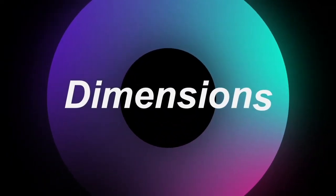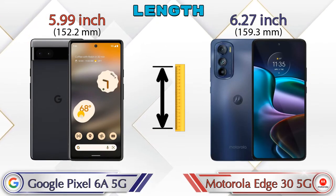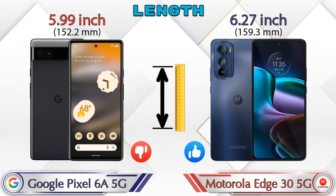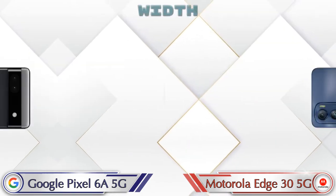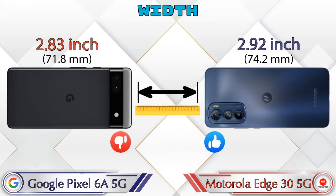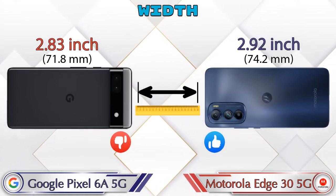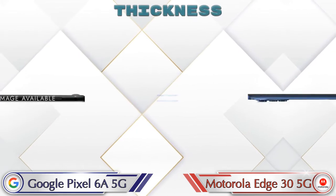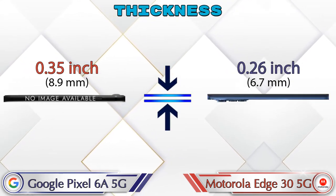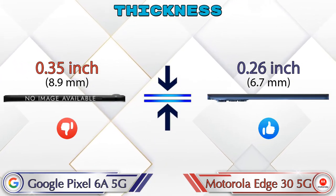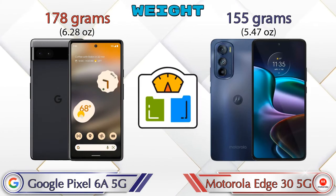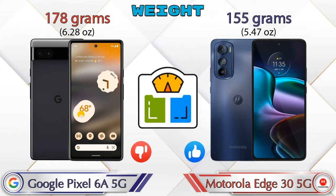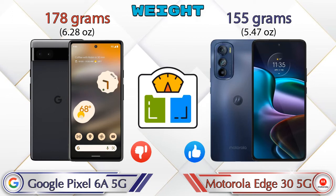Now let's check the dimensions. Length: the Pixel 6a 5G is 5.99 inches and the Edge 35G is 6.27 inches. Width: Pixel 6a 5G is 2.83 inches and Edge 35G is 2.92 inches. Thickness: Pixel 6a 5G is 0.35 inches and Edge 35G is 0.26 inches. Weight: Pixel 6a 5G is 178 grams and Edge 35G is 155 grams.